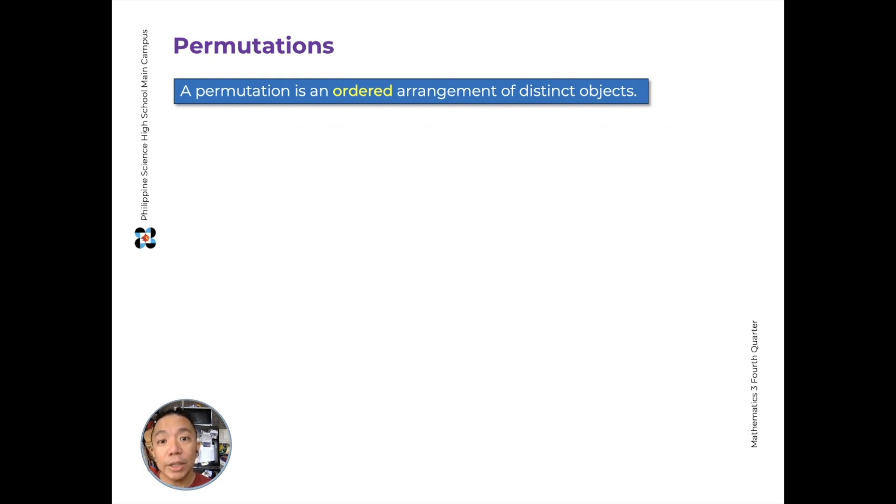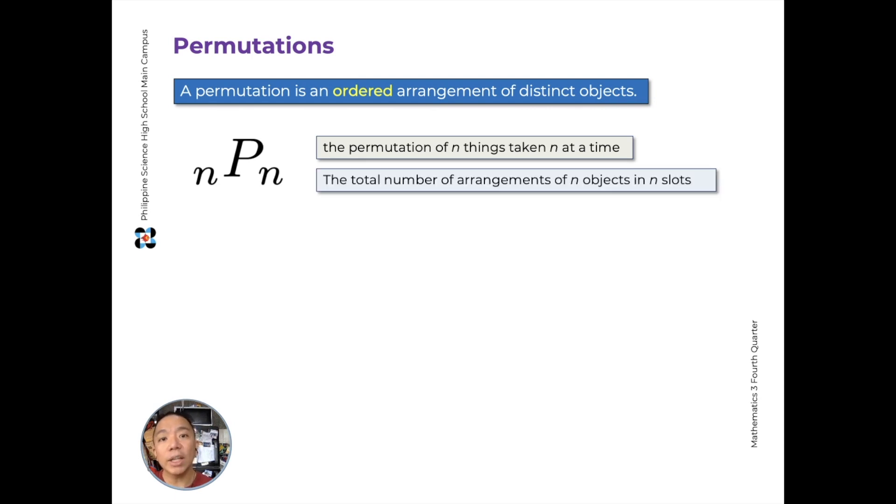Now let's look at the notations you use for permutations. We use it like subscript n, then capital P, then subscript r. We read this as the permutation of n things taken r at a time. So you have n distinct objects, and you'll arrange them all, use them all. And we can interpret this as the total number of arrangements of n objects in n slots, using them all. And this is n factorial.